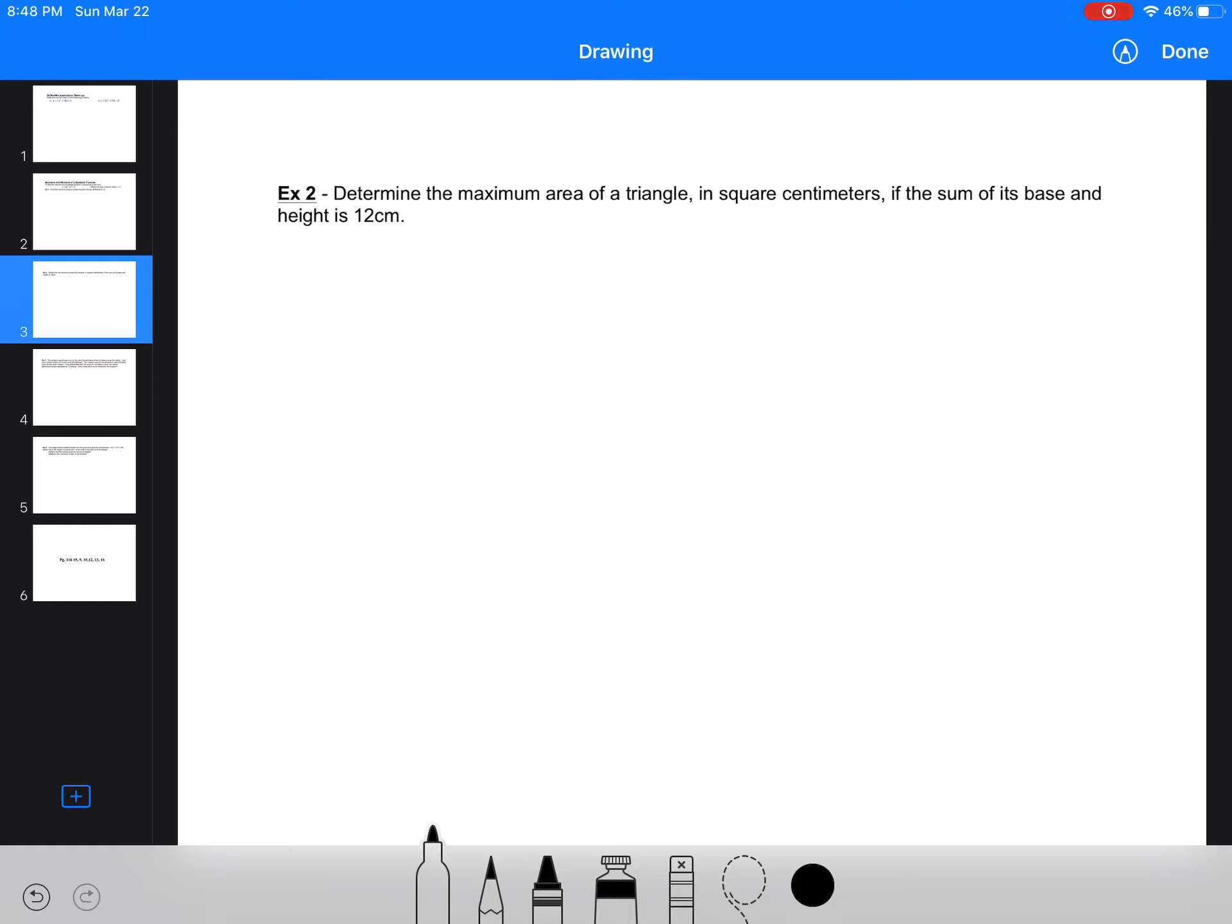The next one: determine the maximum area of a triangle in square centimeters if the sum of its base and height are 12 centimeters. So here, I'll just make a right angle triangle because it's easier to work with. Let x be the base. It could be the base or the height, it doesn't really matter. The other one's going to be 12 minus x because they have to add to 12. So then our area is 1/2 times base times height. So we're going to have x times (12 minus x). Now I'm going to multiply it all together, and I'm going to rearrange it just a little bit. So we're going to have negative 1/2 x squared plus 6x.